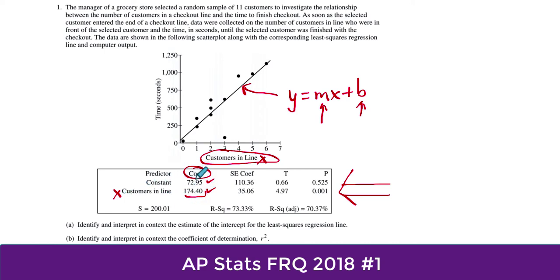Customers in line, they're telling you that's what the x is. So the number in front of the x coefficient is the number in front of the x is 174. So when I write this, it would be y hat. That's the predicted value. It's just y equals mx plus b here. So y equals 174.40x and then plus b. So I'm going to say plus 72.95. That's the equation of the line.